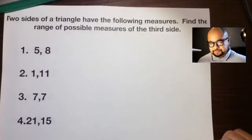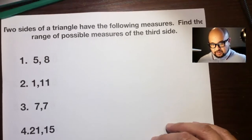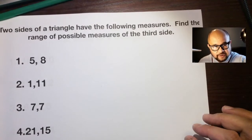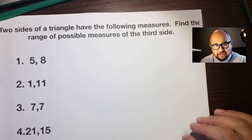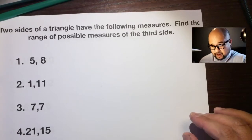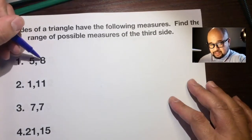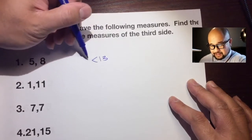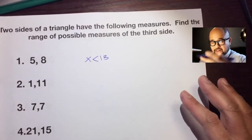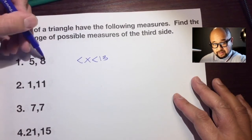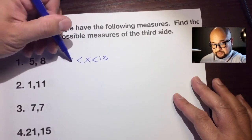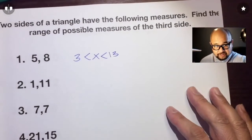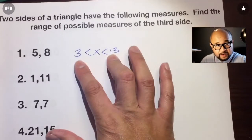Let's do some examples. Two sides of a triangle have the following measures — find the range of possible measures of the third side. We know two things: add to get the maximum — 8 plus 5 is 13, and it can't equal 13, so it has to be less than 13. And the minimum: it has to be greater than 8 minus 5, which is 3. So the possible measures have to be in between 3 and 13.